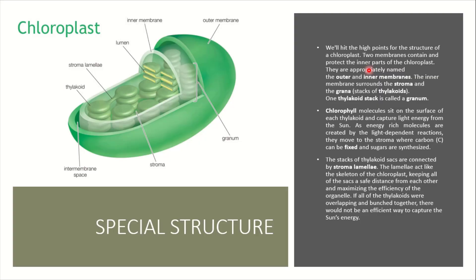If we talk about chloroplast structure, the inner part of a chloroplast has two types of membranes which protect it: the outer membrane and the inner membrane. This is a chloroplast diagram. The inner membrane surrounds the stroma and grana. Inside the chloroplast, there are thylakoids present, and a complete stack of thylakoids forms a granum.